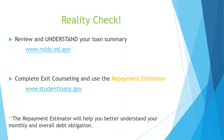Your loan summary is at nslds.ed.gov — that is the national data system. Loan counseling is completed at studentloans.gov, and there is a repayment estimator on that website which will give you a quick idea of what your monthly payment would be and the interest that accumulates over time based on the payment plan you select.